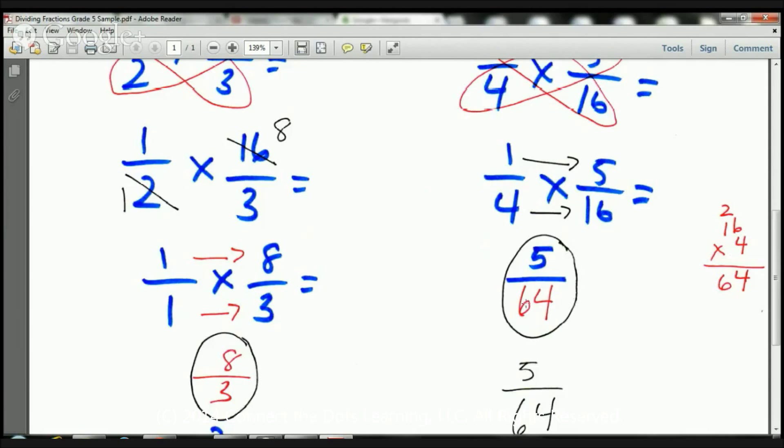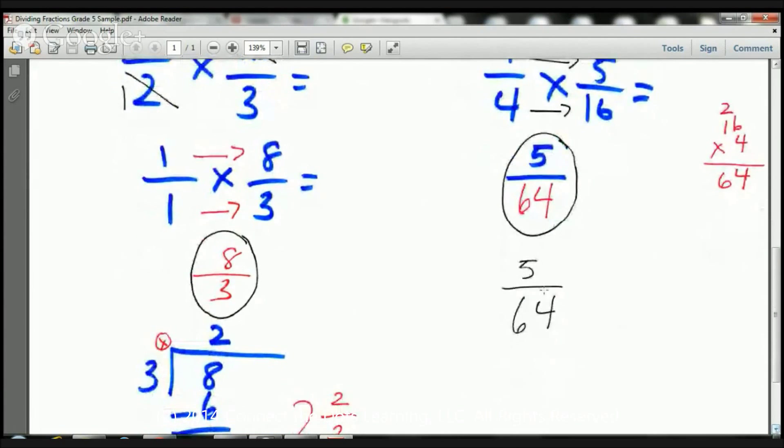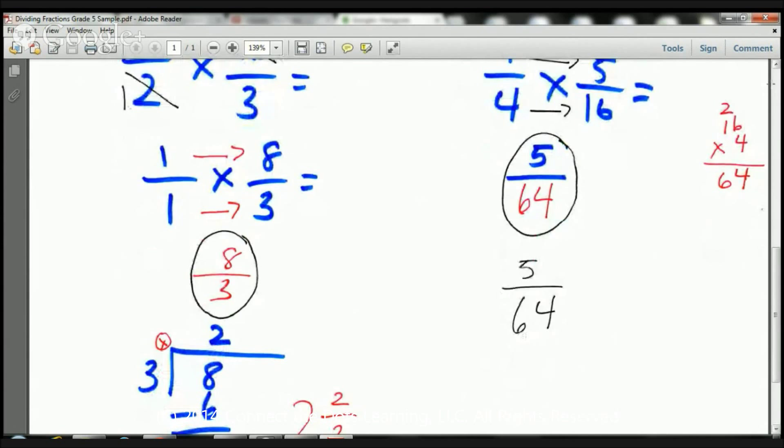So, now I have five sixty-fourths. The reason I have this circled is because I have to see, is there a way that I can reduce it? And there isn't. Five cannot go into sixty-four. They're not multiples of each other. So, the answer is going to be five sixty-fourths.